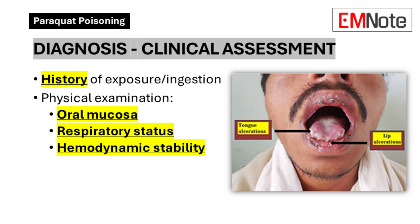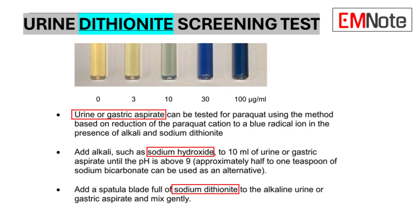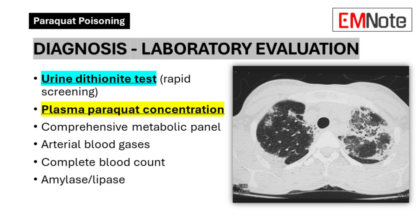Diagnosis. The diagnostic approach to suspected paraquat poisoning encompasses both clinical assessment and laboratory evaluation. The cornerstone of diagnosis remains a thorough history focusing on potential exposure or ingestion, coupled with careful physical examination emphasizing oral mucosa inspection, respiratory status evaluation, and hemodynamic assessment. Laboratory evaluation should be comprehensive, including the rapid urine dithionite screening test and, where available, quantitative plasma paraquat concentration measurement.